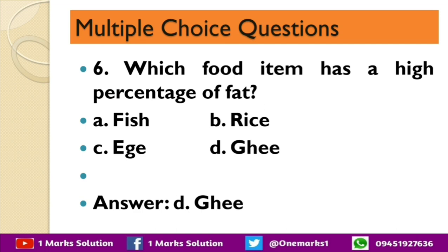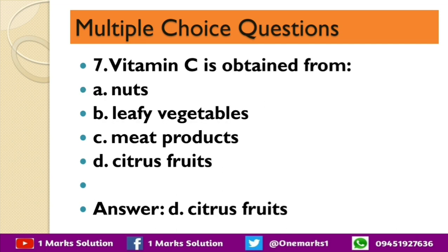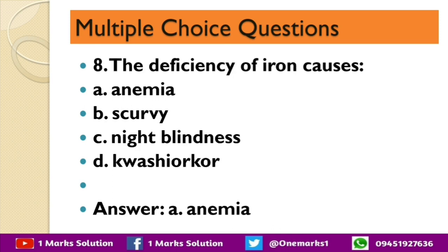Which food item has a high percentage of fat — fish, rice, egg, or ghee? The correct answer is ghee. Vitamin C is obtained from — nuts, leafy vegetables, meat products, or citrus fruits? The correct answer is citrus fruits.